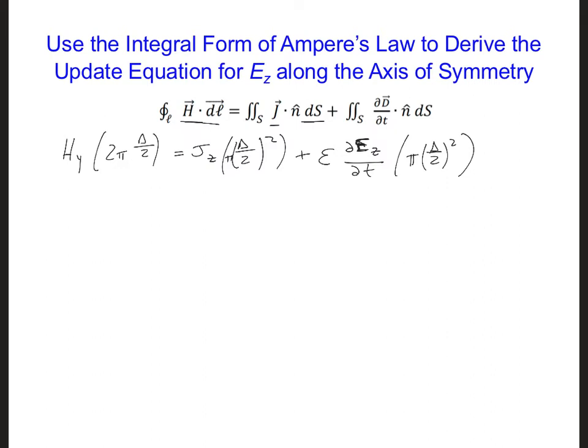For the moment, let's say that there aren't any JZ current density sources along the axis of symmetry, because we're going to end up using a hard source. We'll discuss this later. But let's do account for materials with a non-zero conductivity, in case we need to account for any conductive materials in our model.